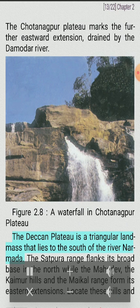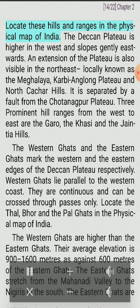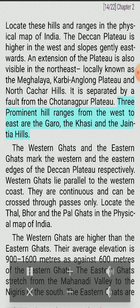The Deccan Plateau is a triangular landmass that lies to the south of the river Narmada. The Satpura Range flanks its broad base in the north, while the Mahadeo, the Kaimur Hills and the Maikal Range form its eastern extensions. The Deccan Plateau is higher in the west and slopes gently eastwards. An extension of the plateau is also visible in the northeast, locally known as the Meghalaya, Karbi-Anglong Plateau and North Cachar Hills. Three prominent hill ranges from the west to east are the Garo, the Khasi and the Jaintia Hills.